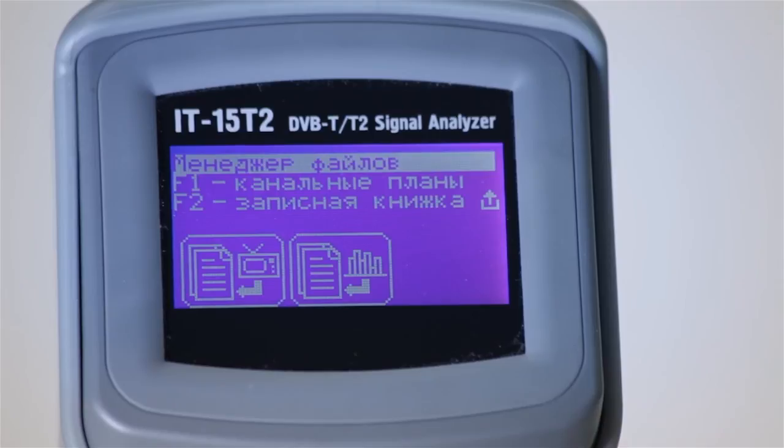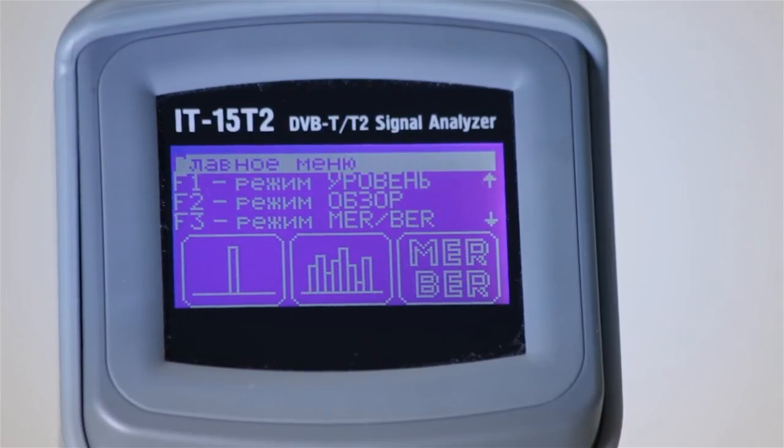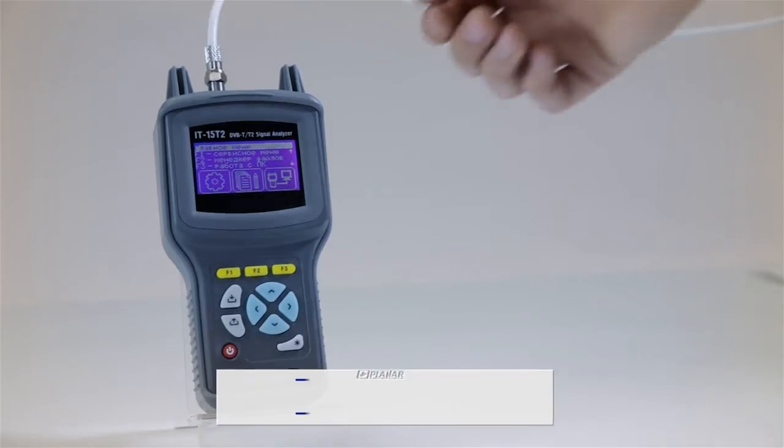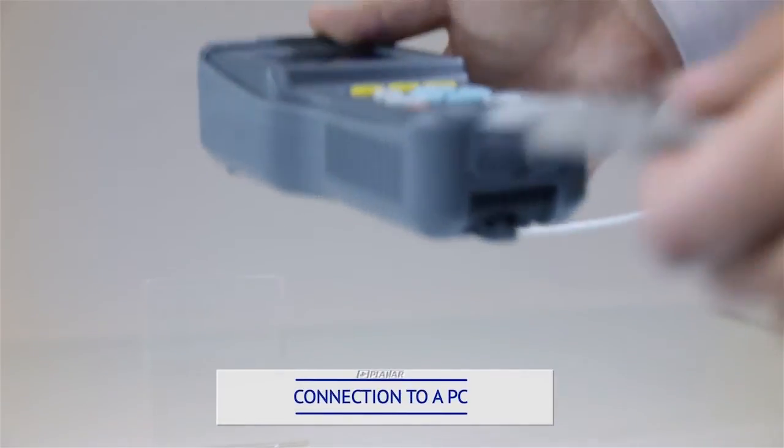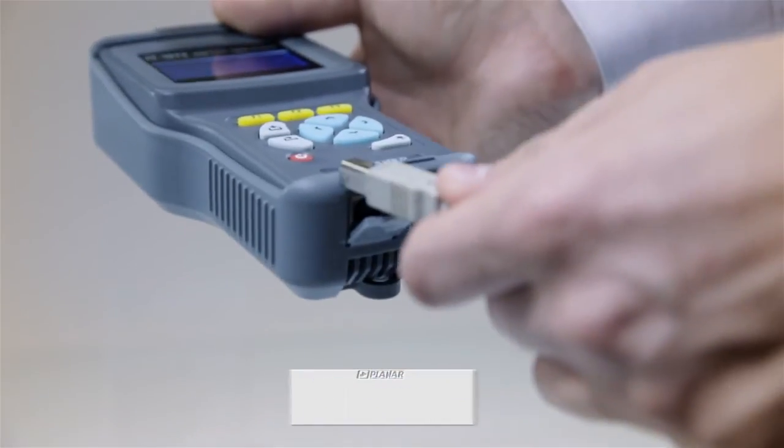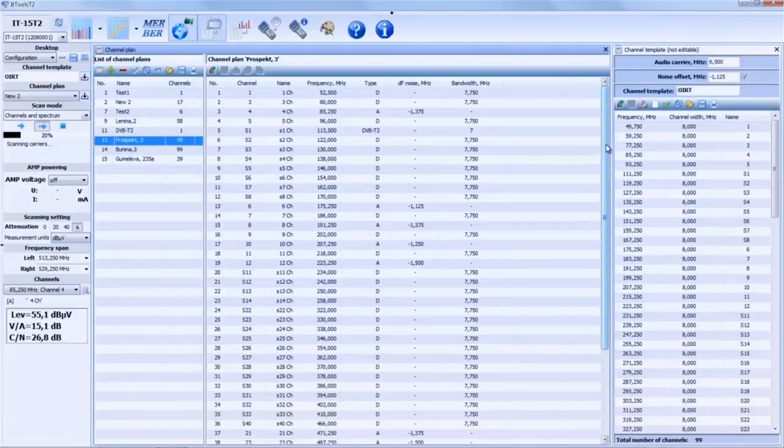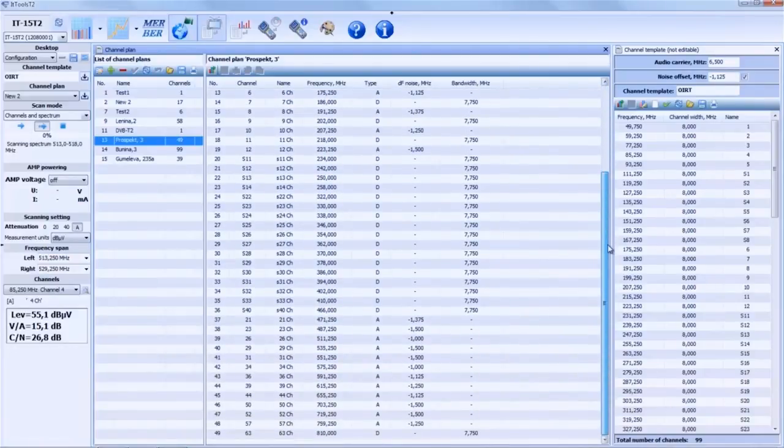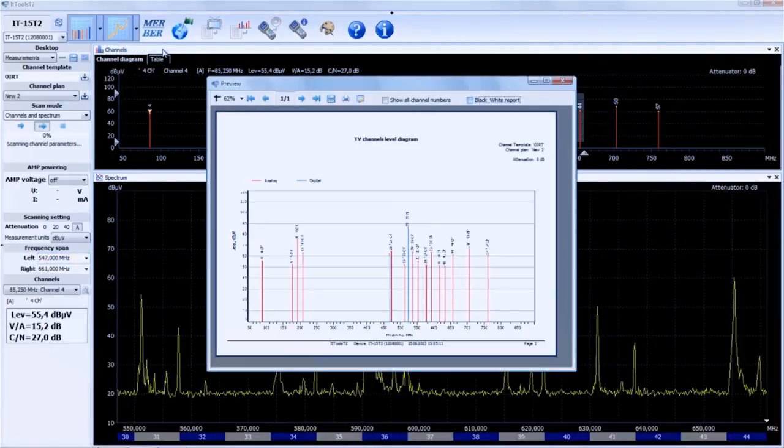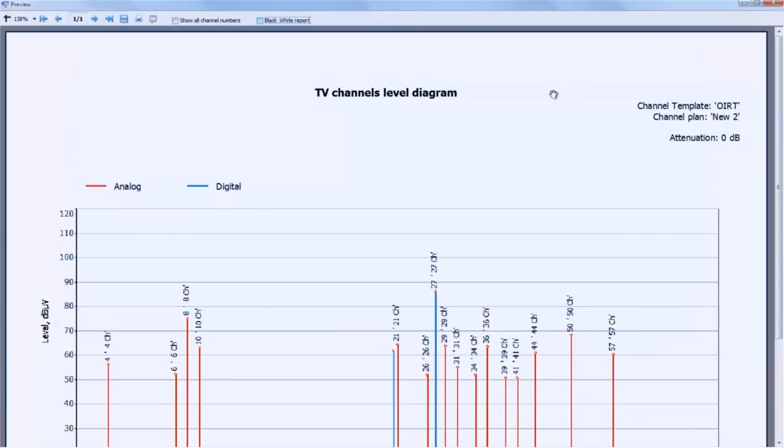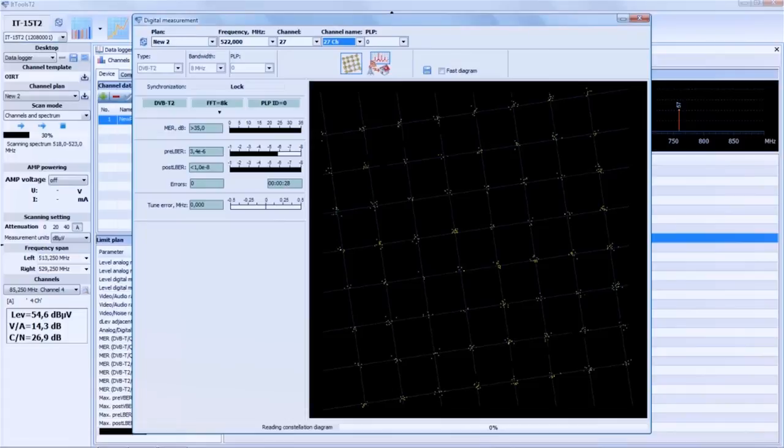The instrument can be connected to a PC and controlled by software available at our website free of charge. This software provides the following benefits: You can easily manage the data logger, create, view and edit the channel plans and channel data logs, as well as download them to or upload them from your instrument. You can view the measurement results as graphs and tables and print them out. You can run your instrument as a virtual instrument and measure all the signal parameters. You can update the instrument firmware.